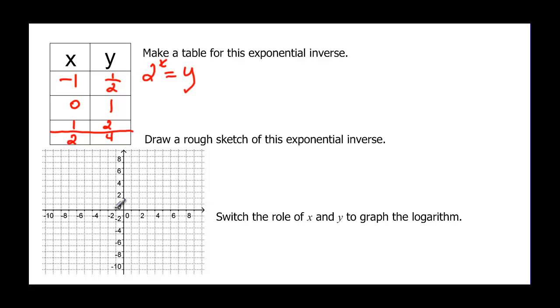So let's graph those points. Negative one, one half is somewhere about there. Zero one, one two, and two four. So we have this exponential curve that's going to look something like this.